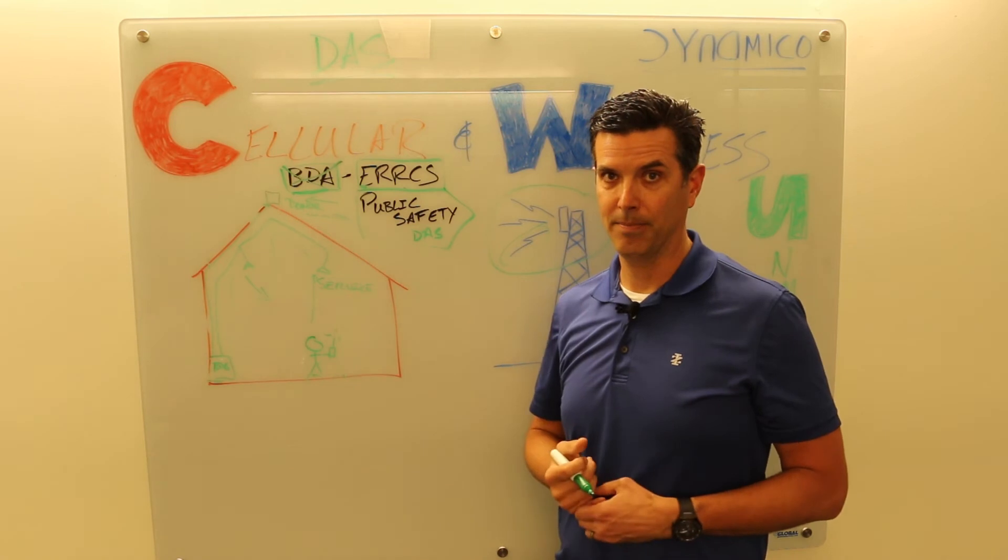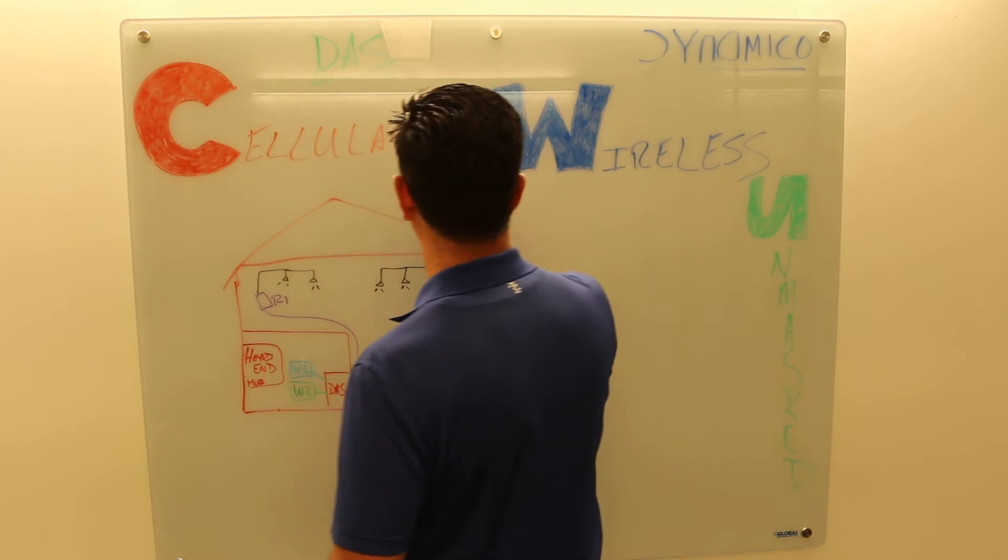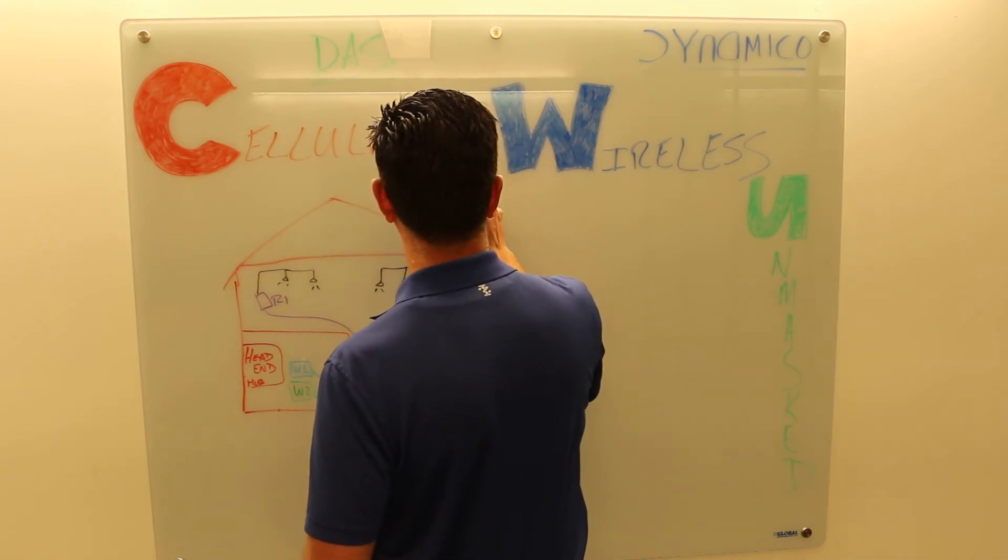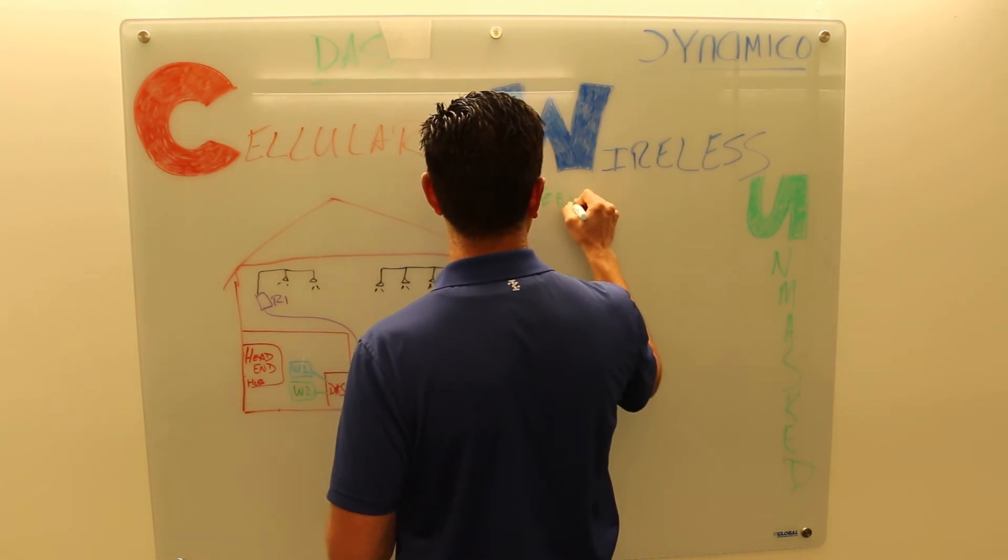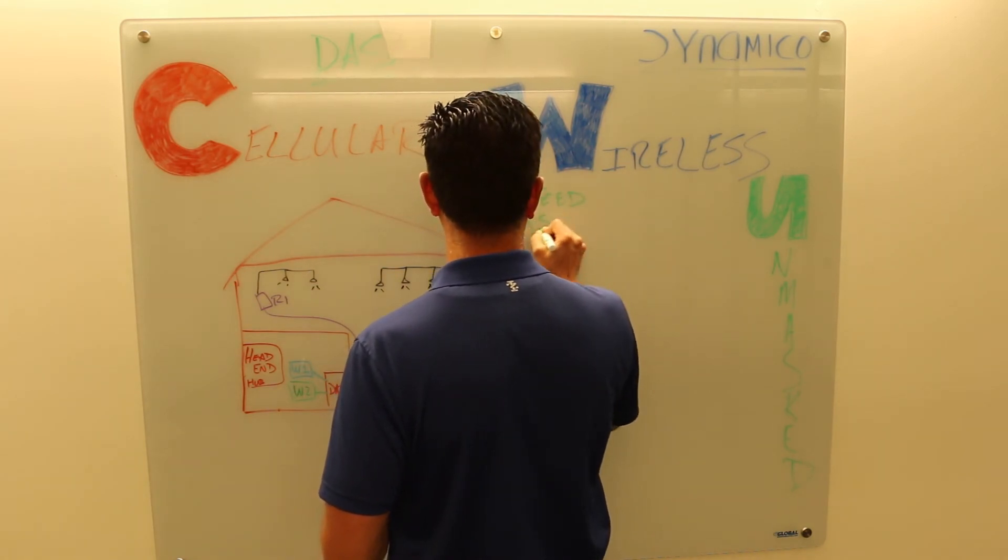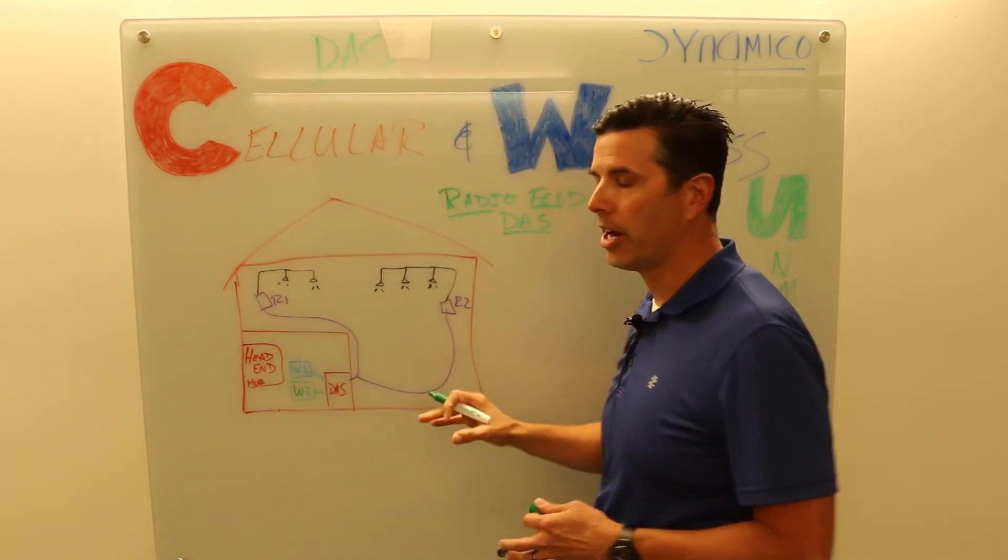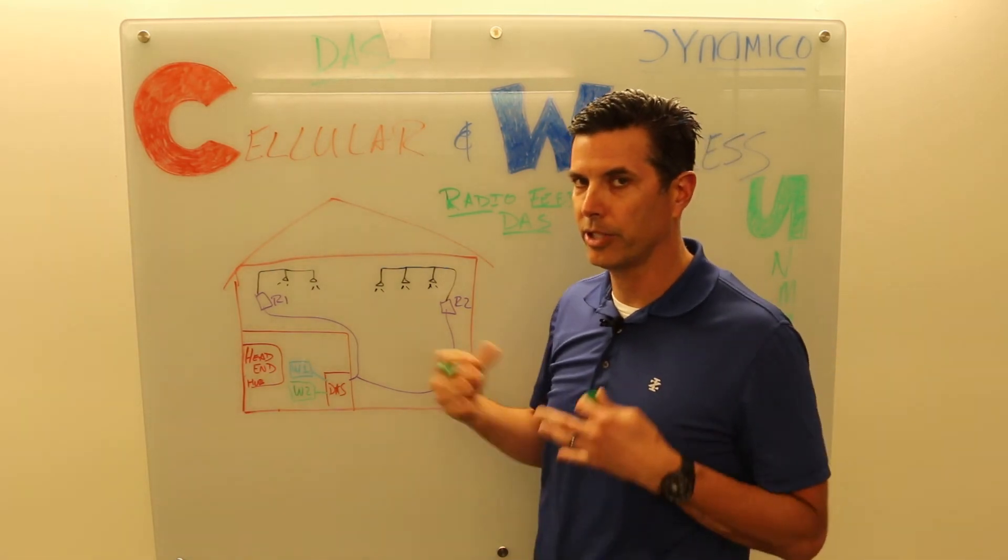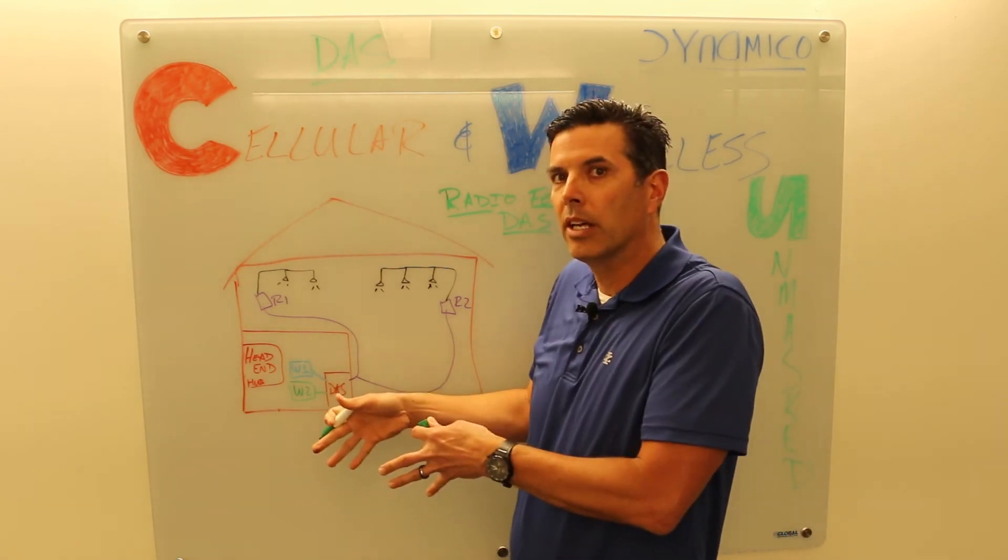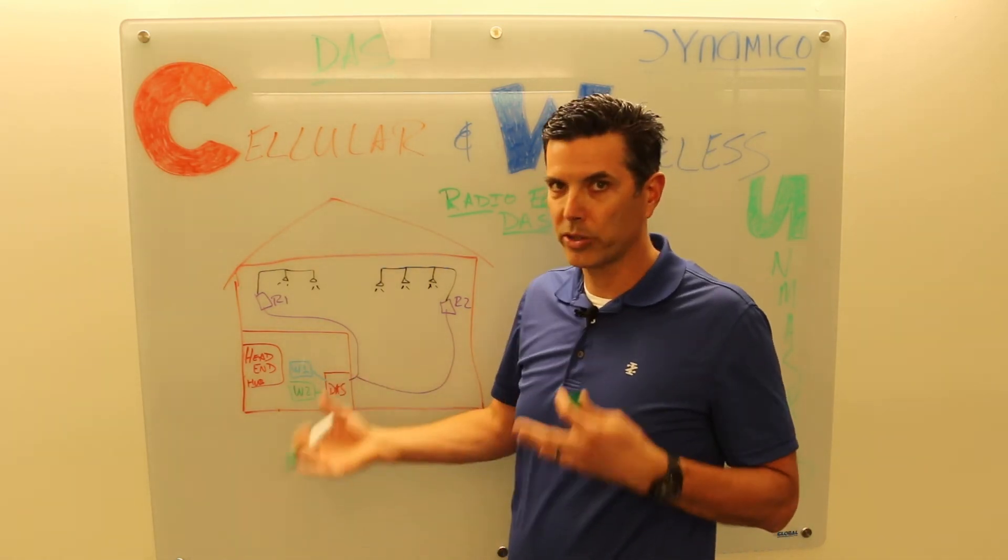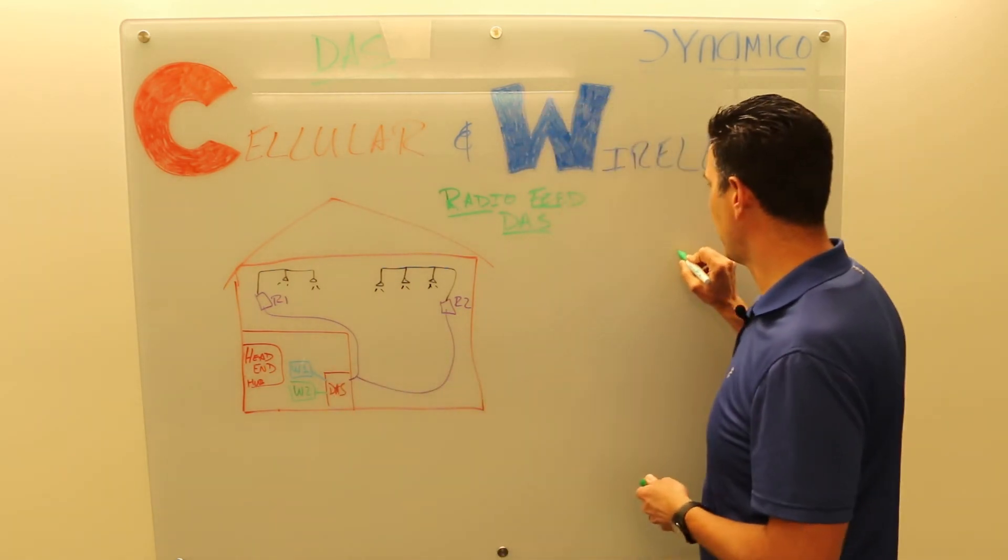Now let's talk about the radio feed DAS. Okay, let's talk about a radio feed DAS. This is very common. We're talking about a radio feed DAS. This is what you typically get inside a big stadium, a large office building, an airport, radio feed DAS. So the carriers, the wireless carriers, your T-Mobile, your Verizon, AT&T, they will donate a radio.